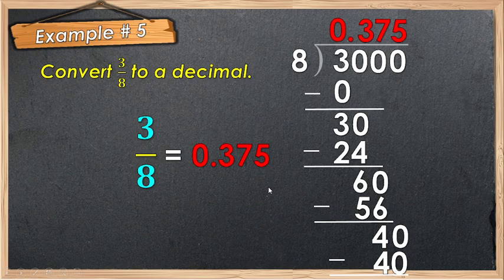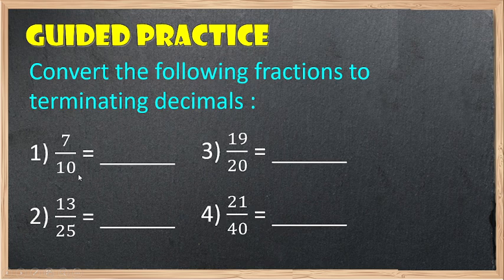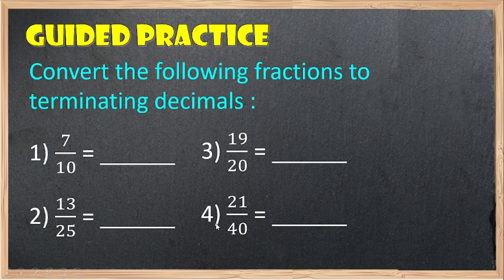That's it. In converting a fraction to decimal, always remember that you need to divide the numerator by the denominator. For your guided practice, convert the following fractions to terminating decimal and comment your answer in the comment section. Number 1: 7 over 10. Number 2: 13 over 25. Number 3: 19 over 20. Number 4: 21 over 40.